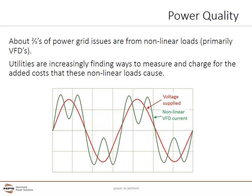Non-linear loads cause issues for the utility including power quality problems and higher line losses. Modern utility power meters increasingly allow utilities to monitor the added effects of non-linear loads from individual users and charge penalties if a user exceeds harmonic values, typically referred to as IEEE 519.